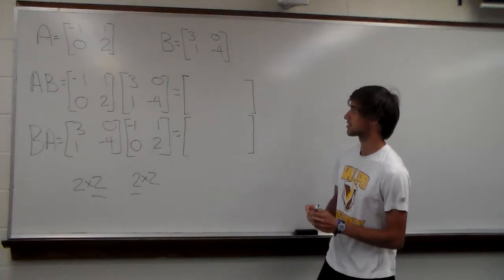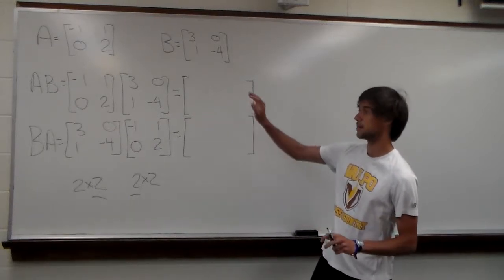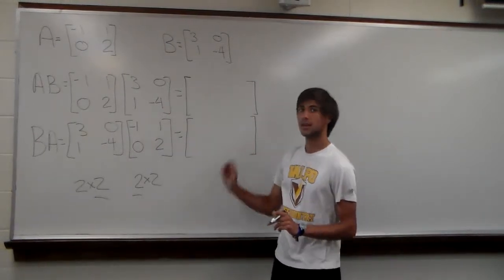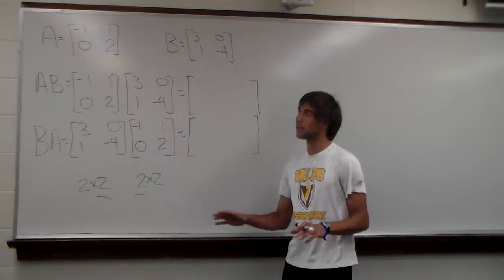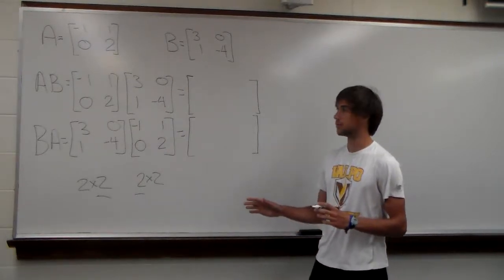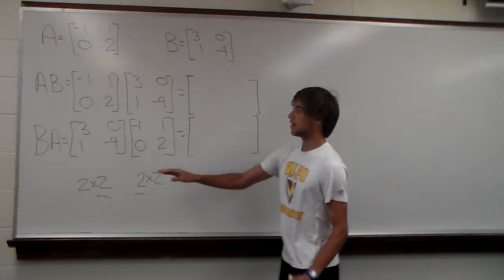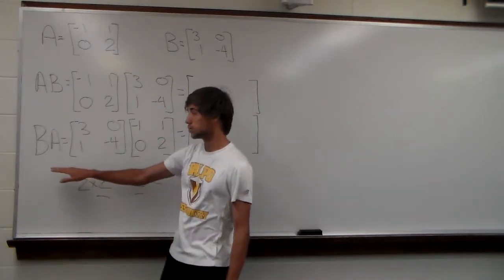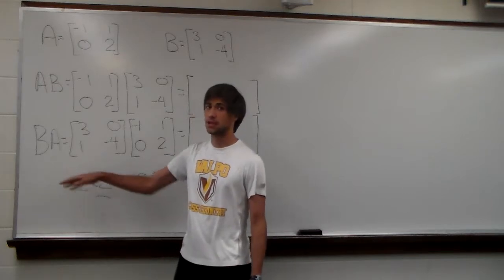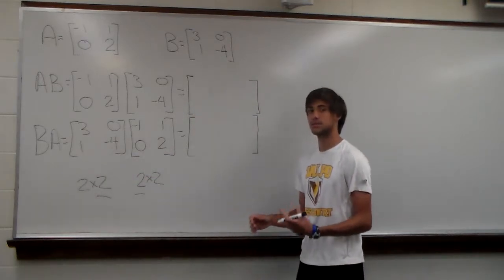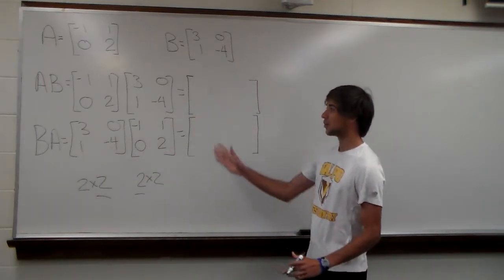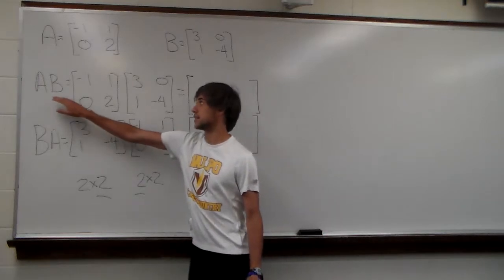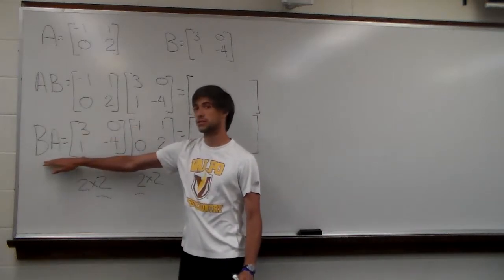This problem asks us to multiply matrices A and B in two different ways. We want to see if A times B is equal to B times A. Does the order that we multiply matrices matter, or can we change it?